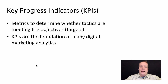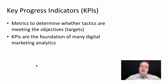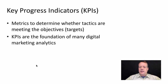Part of that, and part of how you do that, is developing key progress indicators. These are not necessarily objectives in and of themselves, though they could be parts of objectives. Instead, they are metrics to determine whether the digital marketing tactics you're employing are meeting the objectives. For instance, a good key progress indicator might be that time spent on your main website page is greater than one minute on average per user.